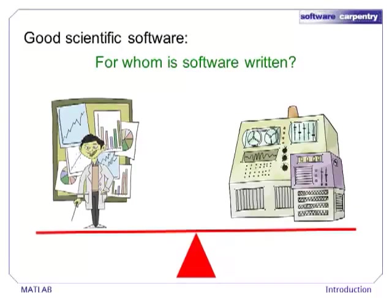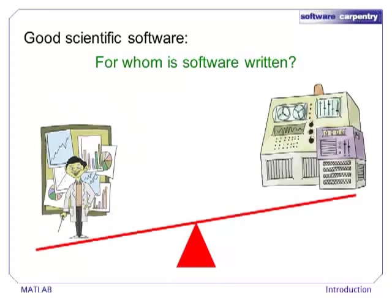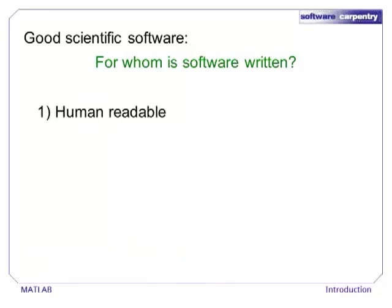We start by making a few observations on what scientific software should be like. Probably the most important aspect of good software is that it is written for humans rather than machines. Humans are the ones who have to understand, critique, and debug software, and your task as a programmer is to make it easier on your fellow programmers. Software written for humans is, first of all, written in a readable format. The structure and purpose of code should be obvious.